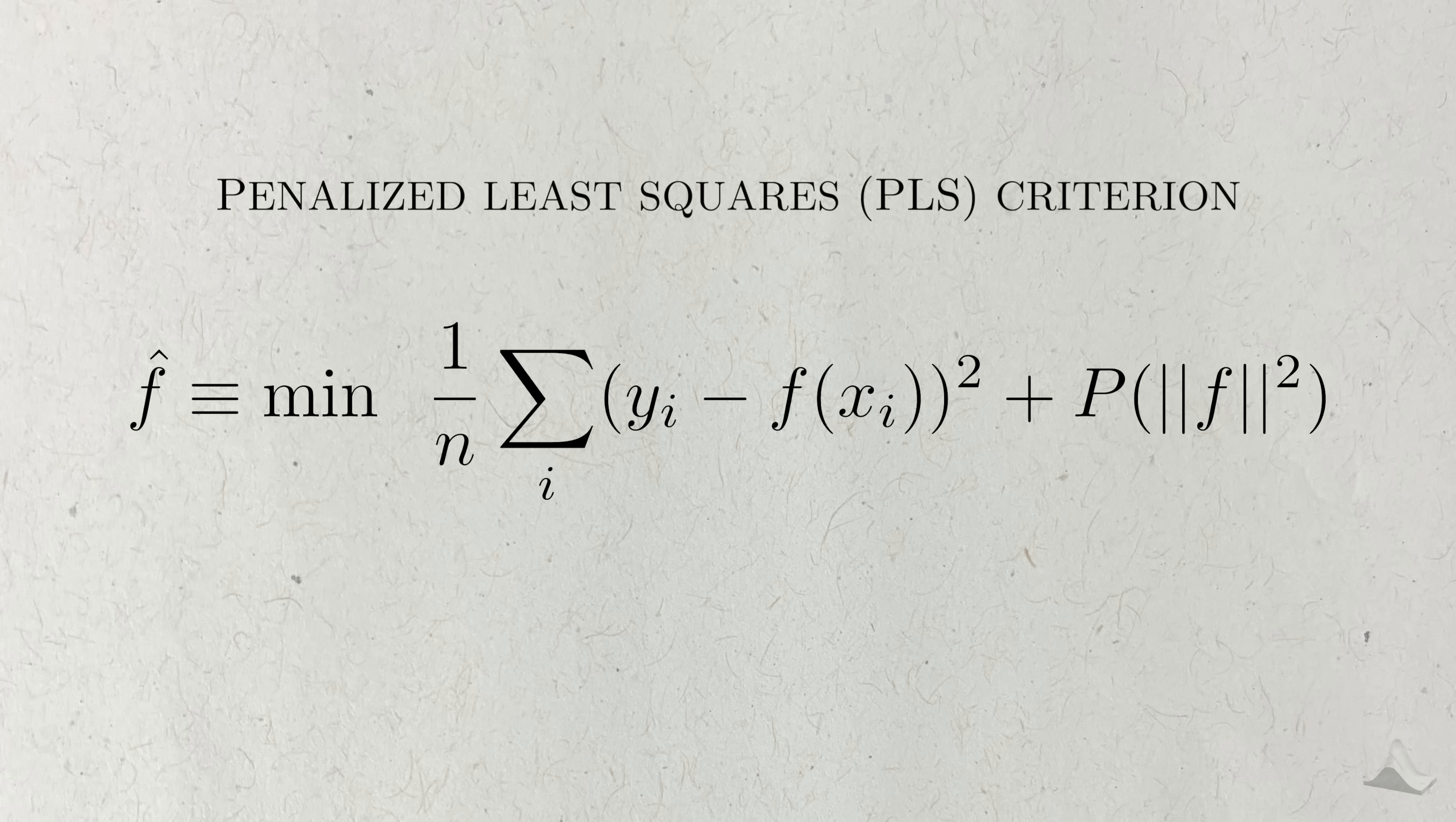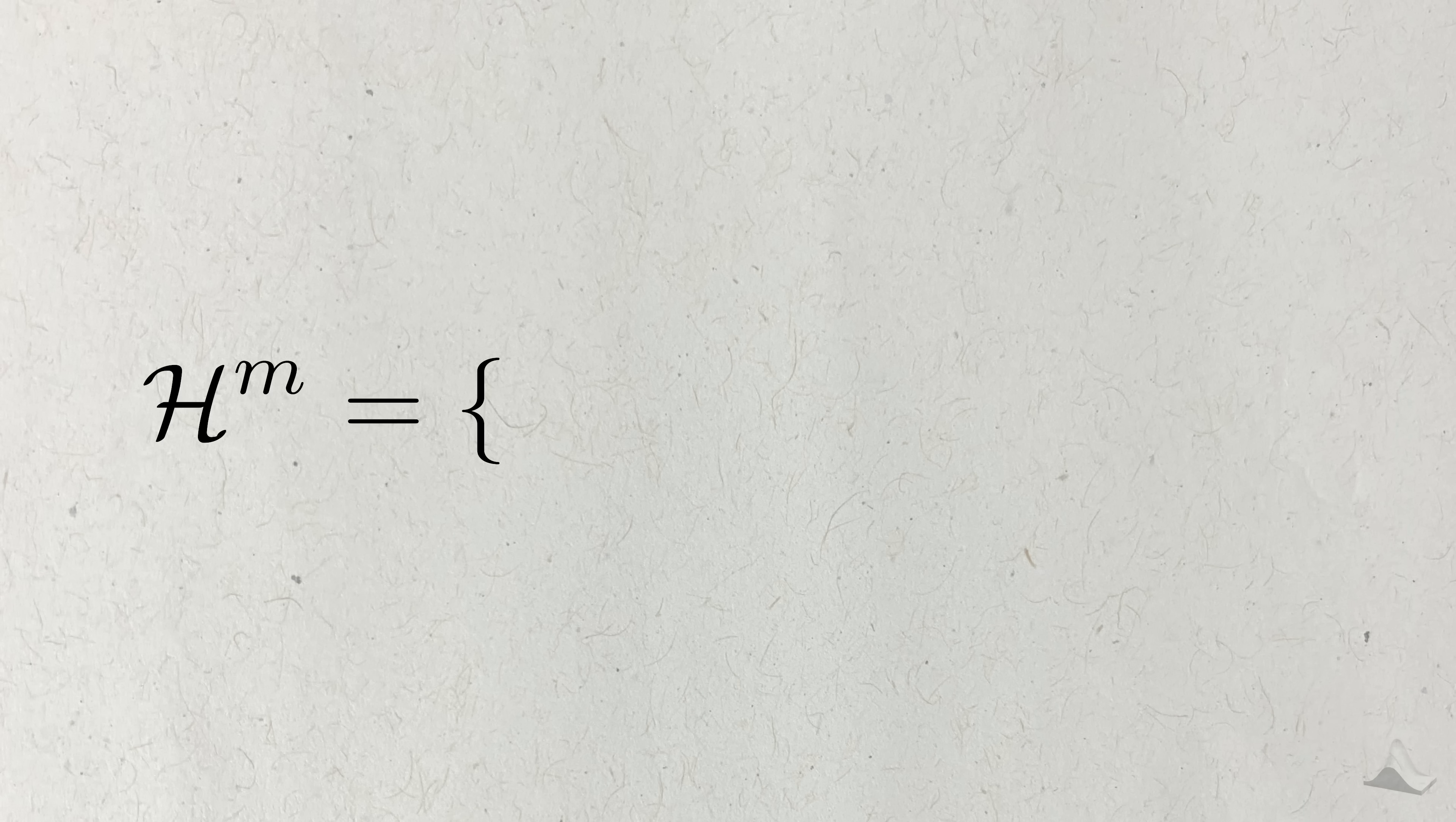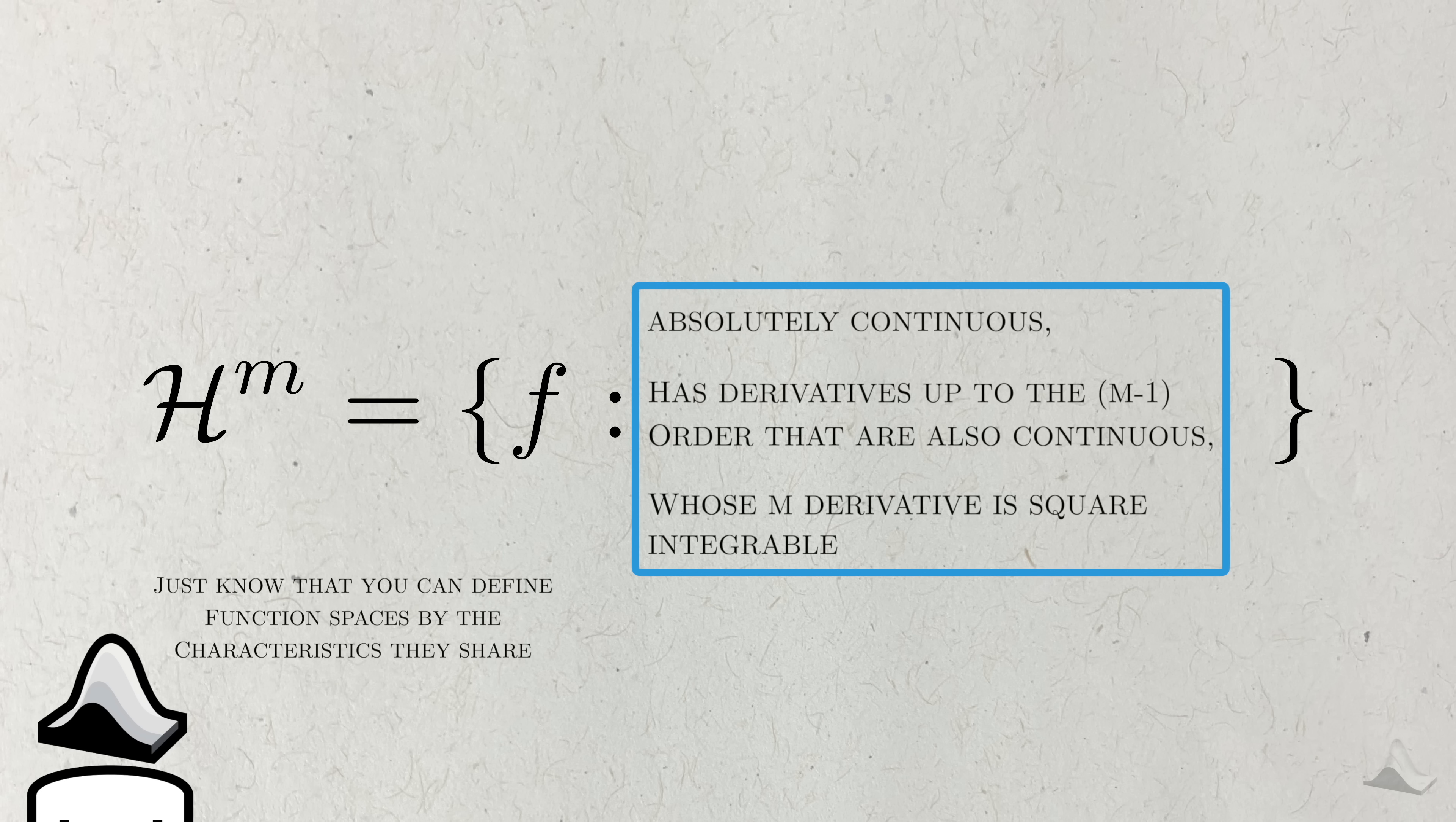But we just need one last thing. Instead of just searching for a generic function, we often restrict our search to a specific family or a specific space of functions. For example, we could choose to focus on the space consisting of functions that are absolutely continuous, have derivatives up to the m minus 1th order that are also absolutely continuous, and whose m-th derivative is square integrable on the region from a to b. You don't need to know what any of that means. All you need to know is that you can define a function space based on the qualities that the member functions share.